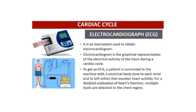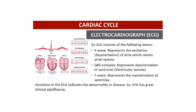We use an ECG to obtain an electrocardiogram, which is basically a graphical representation of the electrical activity of the heart during one cardiac cycle. To get an ECG, a patient is connected to a machine with three electrical leads — one on each wrist and one on the left ankle — to monitor heart activity. For detailed evaluation, multiple leads are also attached to the chest. The ECG consists of a P wave, which represents depolarization of the atria causing atrial systole; a QRS complex, representing depolarization of the ventricles (ventricular systole); and a T wave, representing repolarization of the ventricles. Any deviation from the standard ECG indicates that the person has some disease.